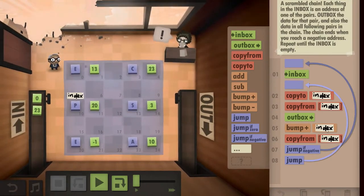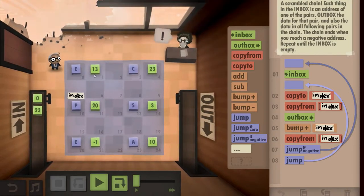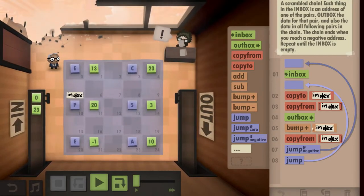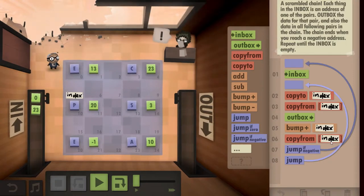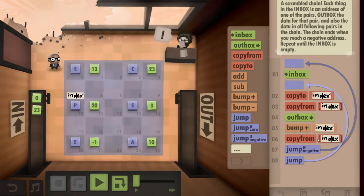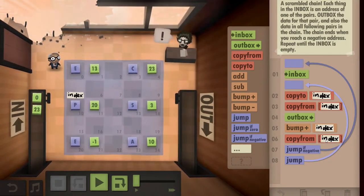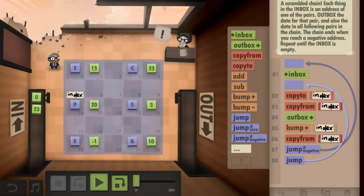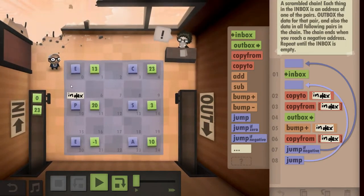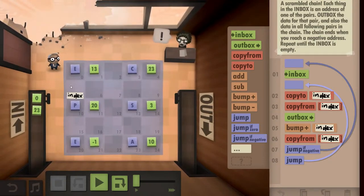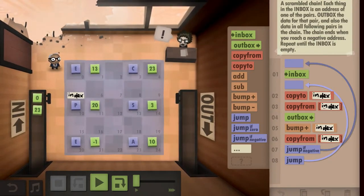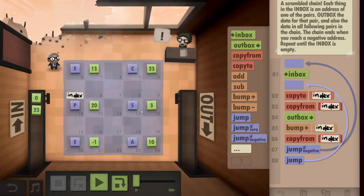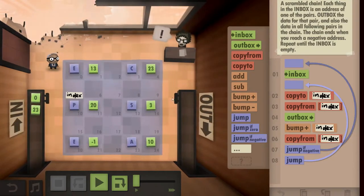Then bump up my index to get the next field which holds the next address and then copy from what's in that indexed field. Which is this, copy that back to the index because that's our new index we want to use, so we would now have 13 in this one. Copy from what's indexed at 13 which would be the S, outbox the S.